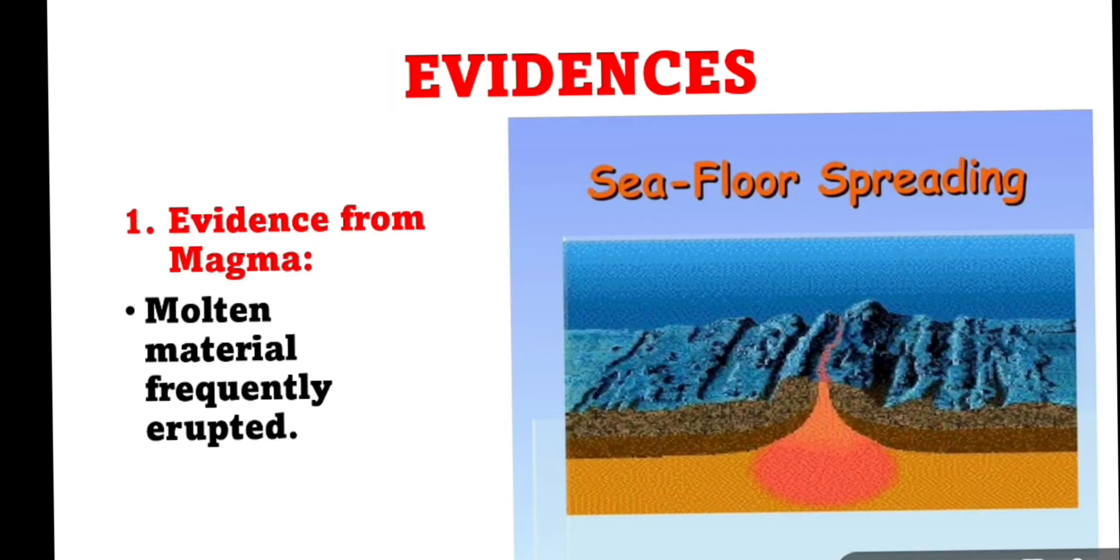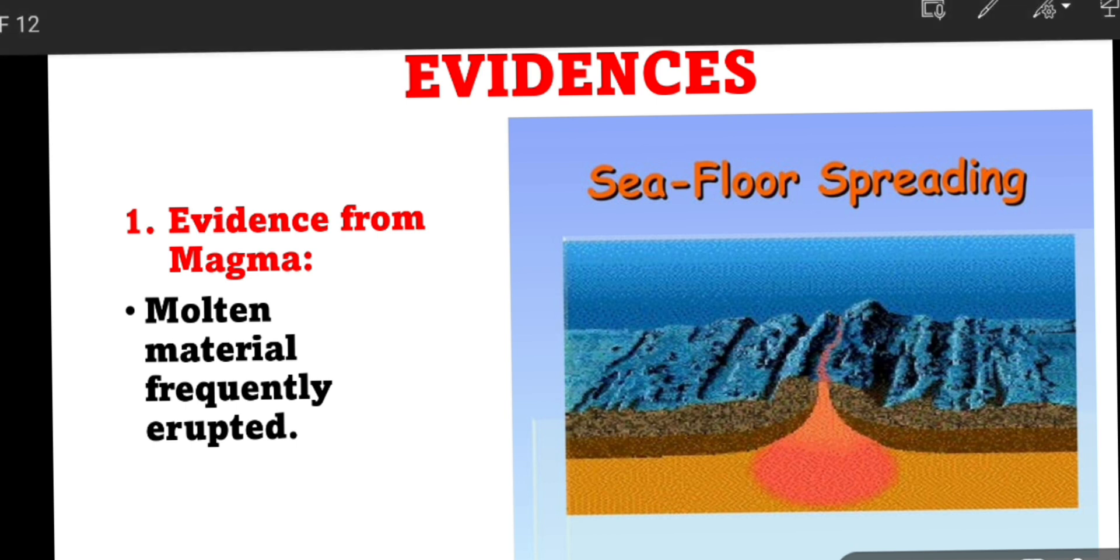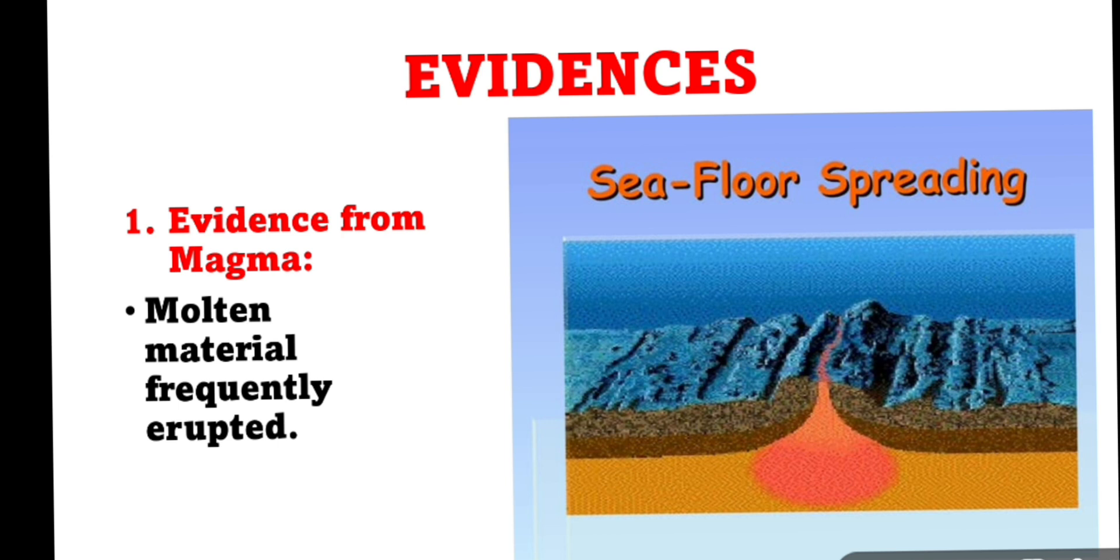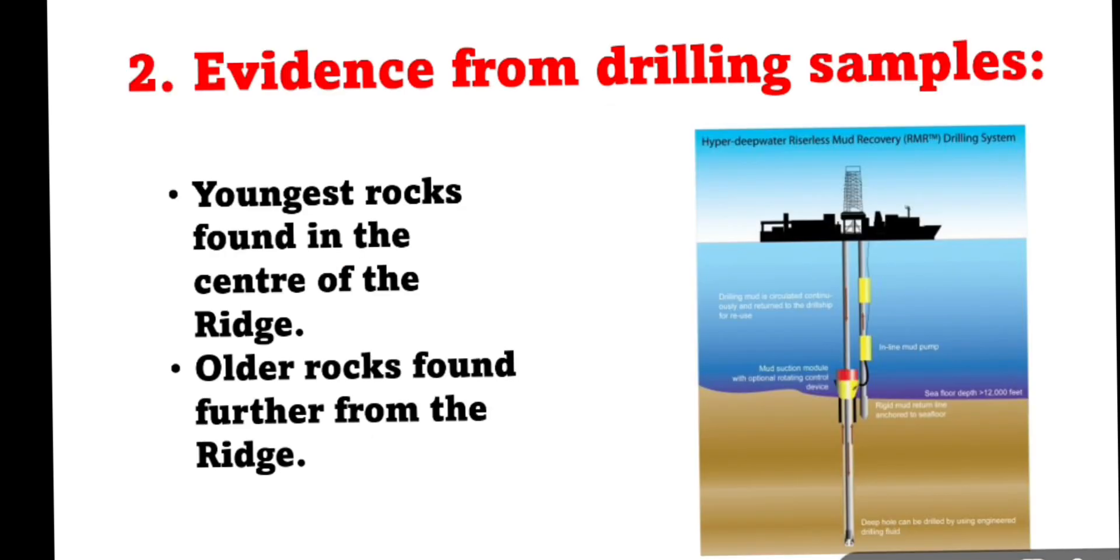Let us understand what other evidences given by Harry Hess to prove that seafloor is spreading. The first evidence he gave is evidence from magma. Molten material frequently erupts. It is seen that over a period of time, seafloor mapping was done and understood that magma is continuously erupted.